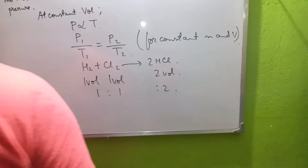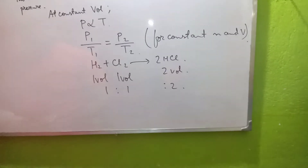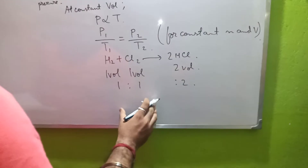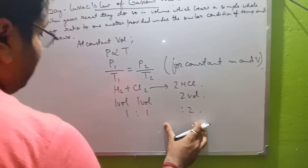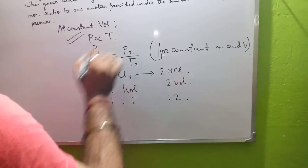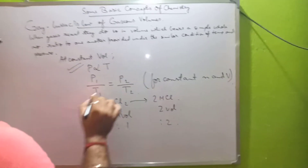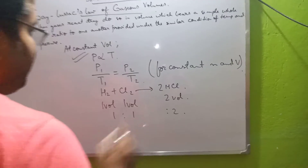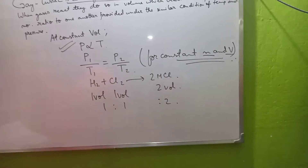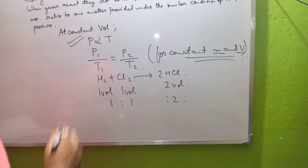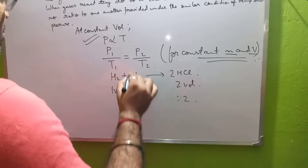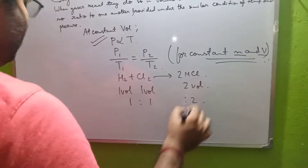Based on this, Gay-Lussac stated that when gases react among themselves they always react in volumes. We know that P₁/T₁ = P₂/T₂ for constant volume of a gas, meaning constant number of moles and total volume. As seen in the H₂ + Cl₂ example, one volume of H₂ and one volume of Cl₂ gives two volumes of HCl.